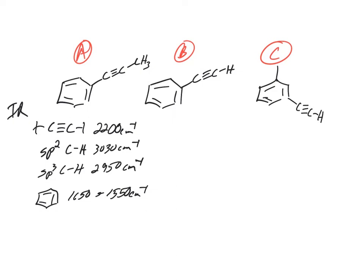B doesn't actually have any SP3 C-Hs. It does have an SP C-H, which is different. That's going to be a really strong, sharp peak around 3300 wavenumbers. Otherwise, it has pretty much the same peaks, so it would be hard to identify the difference.